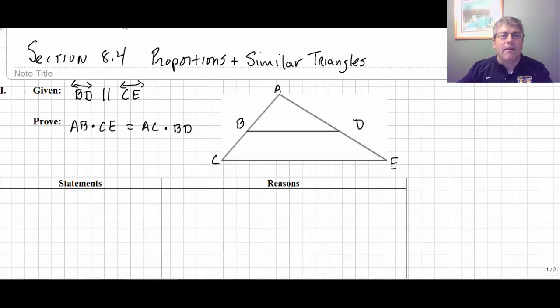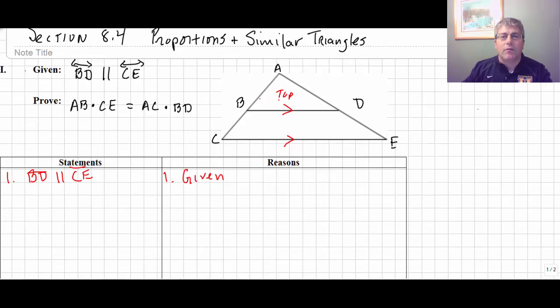We are given that BD is parallel to CE. And what we want to do is we want to prove that AB times CE is equal to AC times BD. What we're going to do is we're going to prove this top triangle similar to the whole entire big triangle. And once we do that, we'll be able to extend and talk about proportions in our similar triangles.